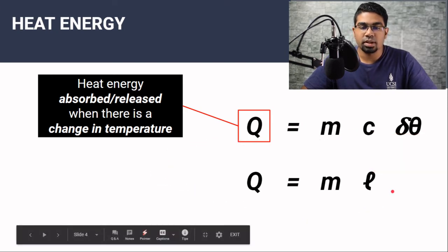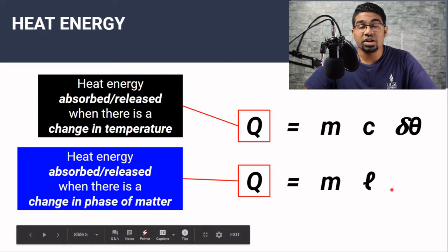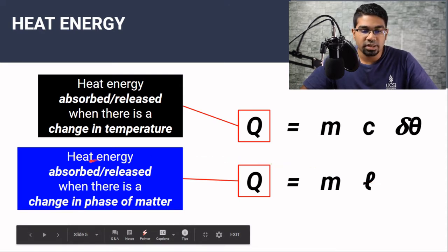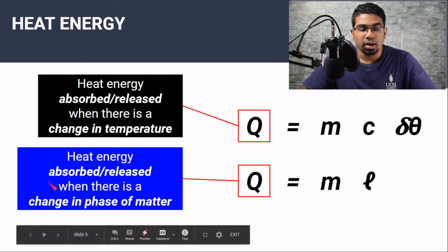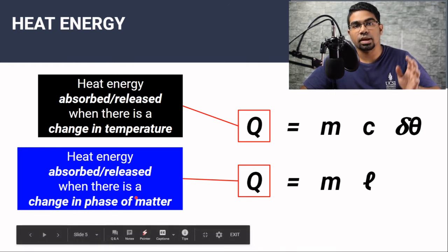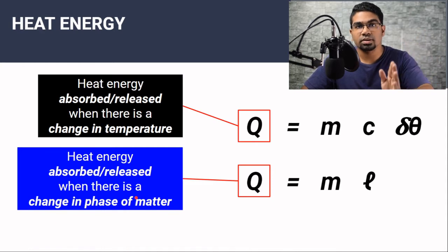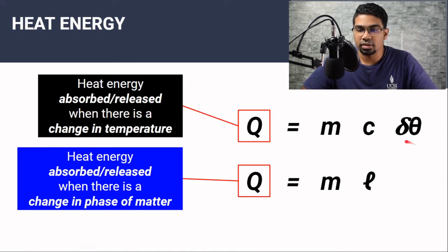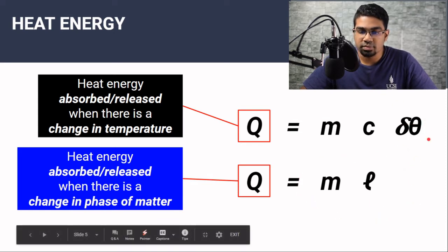Q equals ML is used when there is a change in phase of matter — heat energy that is absorbed or released. When there is a change in phase, meaning a change from solid to liquid, liquid to gas, or the other way around. By looking at the formulas, you can tell right away: here we have delta theta, and here we have no delta theta. So Q equals MC delta theta is when there is a change in temperature, and Q equals ML is when the temperature is constant.